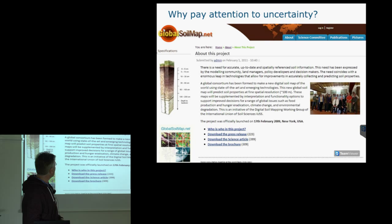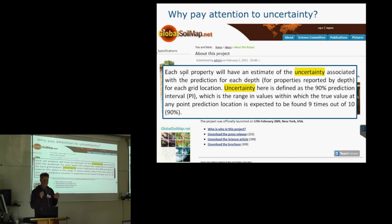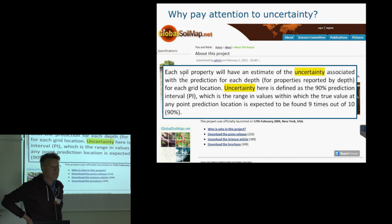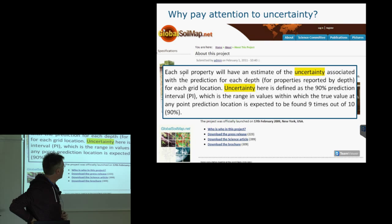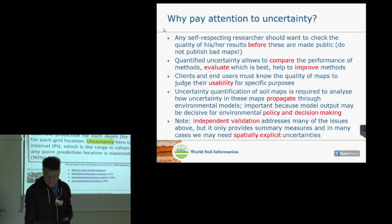One of the things they want is not only to make maps of soil properties, but also to quantify the uncertainty associated with those maps. It's not enough to just predict clay content, organic matter, or any soil property — you also want to know how accurate that prediction is. The GlobalSoilMap.net project aims to quantify these uncertainties with 90% prediction intervals: the lower and upper limit at any location, for any soil property, at any depth.